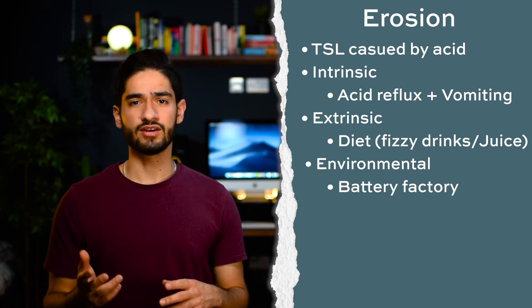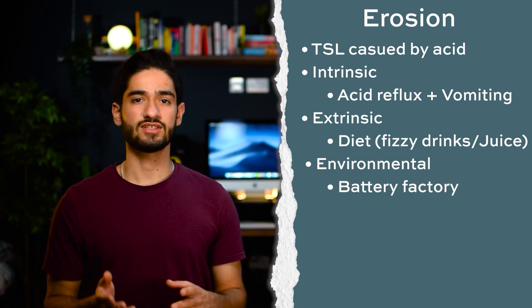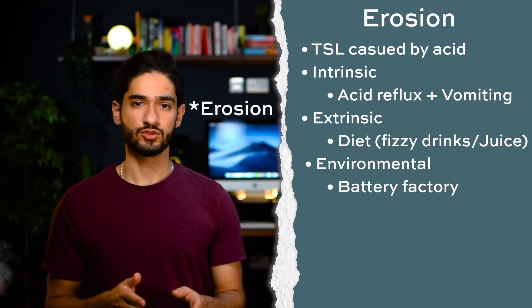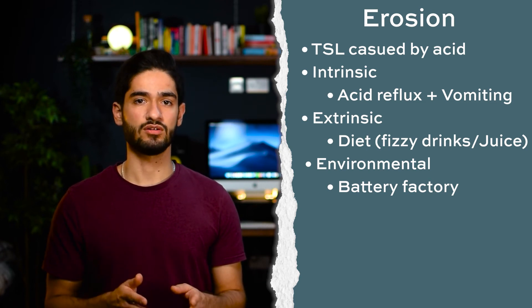There are also environmental sources of acid, like working in environments such as a battery factory. This is a lot rarer now because of stricter health and safety regulations. There are plenty of other causes for tooth surface loss as well, so pause here for the full list. Once you've identified the cause, there are a couple of things to look out for when assessing whether the tooth surface loss is ongoing or arrested.